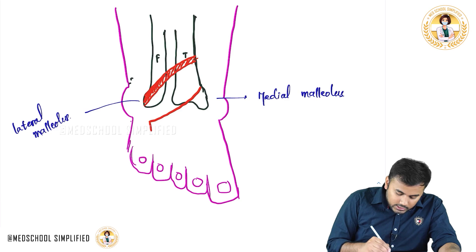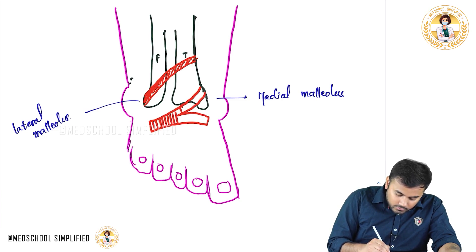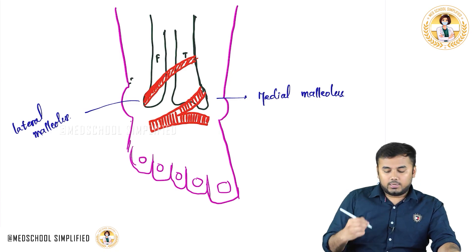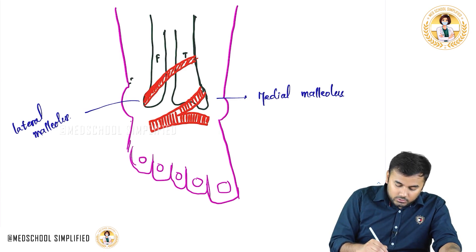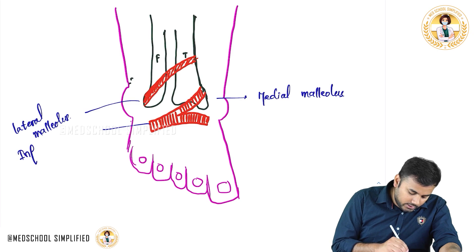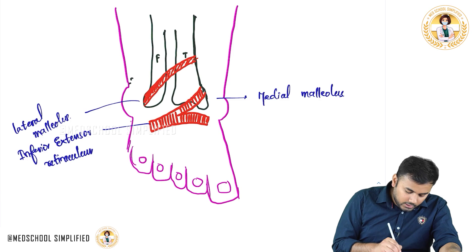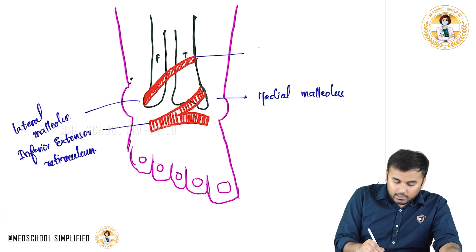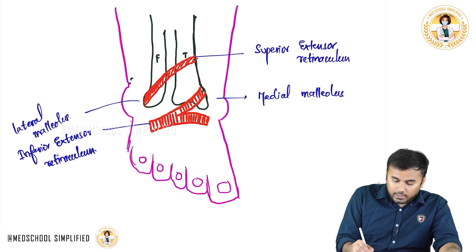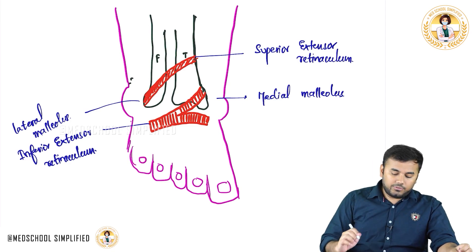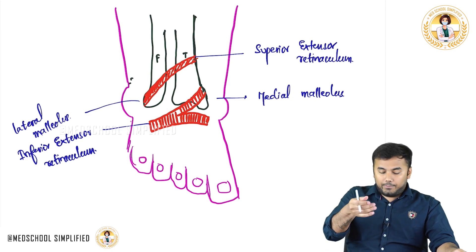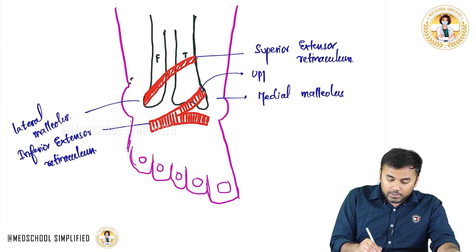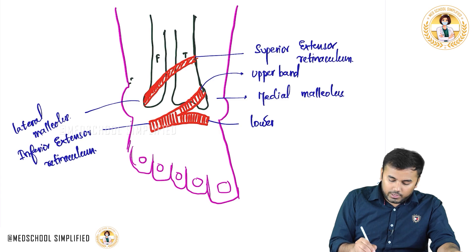When I say superior extensor retinaculum there should also be an inferior extensor retinaculum. This retinaculum which you can see here is your inferior extensor retinaculum. We have got one as superior extensor retinaculum and the next one is inferior extensor retinaculum. In this inferior extensor retinaculum you have got two bands: the one on top is called upper band and the one on the lower part is called lower band.